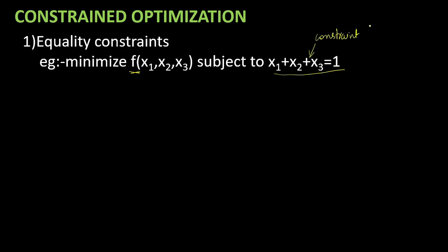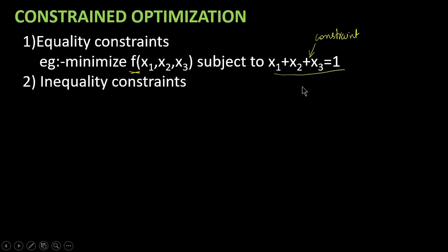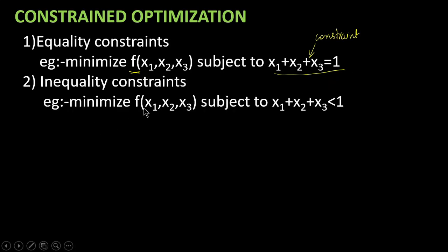The second type is inequality constraints. We have to minimize f of x1, x2, x3 subject to the constraint x1 plus x2 plus x3 should be less than 1. This is an inequality condition — this is an inequality constraint.